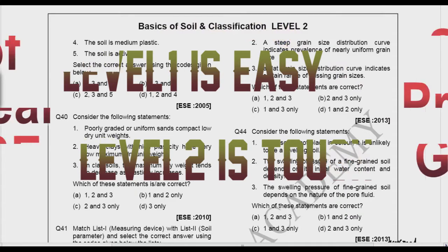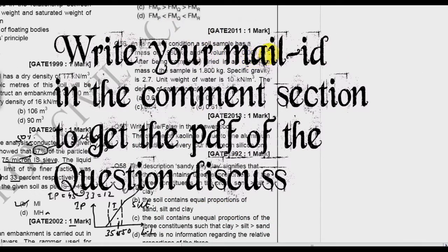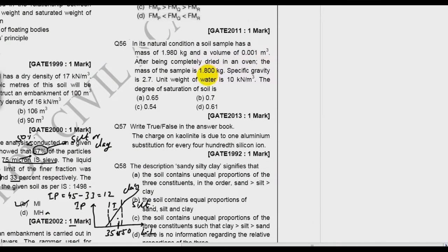In this video I will be starting with: in the natural condition a soil sample has mass 1980 kg and volume 0.001 meter cube. After being completely dried in an oven the mass of the sample is 1.8 kg. Specific gravity is given as 2.7, unit weight of water is given, so you have to find out the degree of saturation.